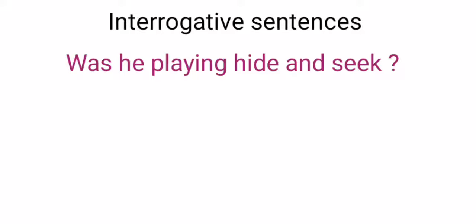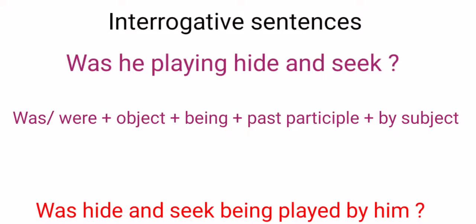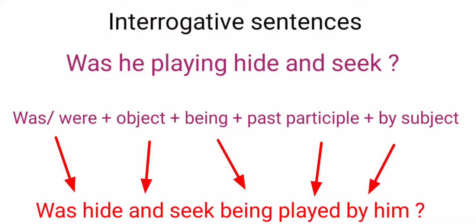Now interrogative sentences. Look at this sentence: 'Was he playing hide-and-seek?' This sentence is active voice. Now let's convert this sentence into passive voice. Here's the structure: 'was' or 'were' plus object plus 'being' plus past participle plus 'by' subject. You have to remember this structure.